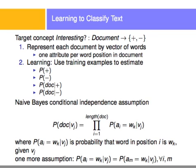Say we have a target concept — whether a document is interesting for us or not. The target can be either positive or negative, so a document can be classified as positive or negative. You can have many more classifications: positive, negative, neutral, acceptable, unacceptable, whatever the classes are. I'm just illustrating this with two classes. Documents can be positive or negative.